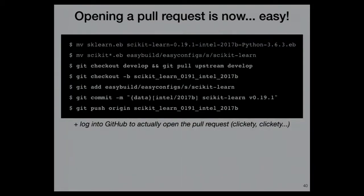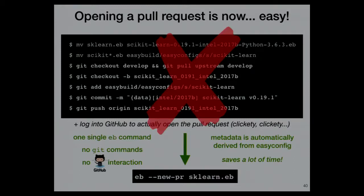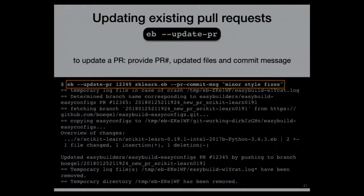To summarize: what you used to do manually — moving and renaming files to the right location, a bunch of Git commands, logging into GitHub and clicking around to open the pull request — is now one single 'eb --new-pr' command. No Git, no GitHub clicking, it parses the easyconfig file to get the renaming right and the PR title right, and it saves a lot of time.